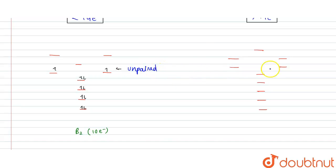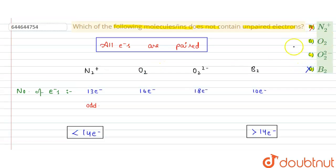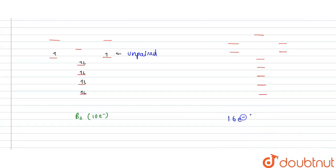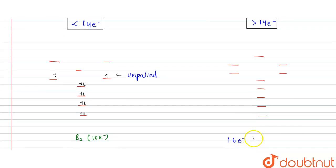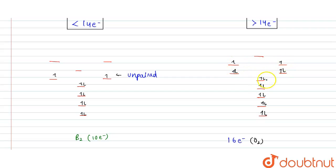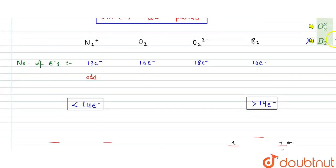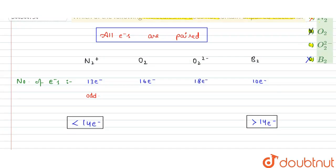Since B₂ has unpaired electrons, it is not our answer. Now we check O₂ with 16 electrons, which falls in the greater-than-14 category. Filling: 1, 2, 3, 4, 5, 6, 7, 8, 9, 10, 11, 12, 13, 14, 15, 16 — the last two electrons occupy degenerate π* orbitals with one each, so O₂ also has unpaired electrons and is wrong.